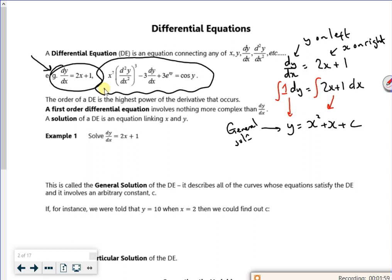And then, if you subbed in a coordinate and worked out what c was, you've got a particular solution. So you've actually done this, but it's this bit here that you've not been aware of.